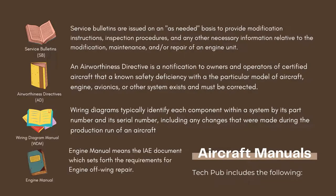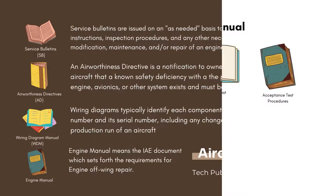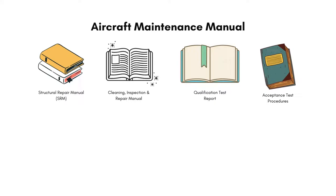The Engine Manual means the IAE document which sets forth the requirement for engine off-wing repair. There are various other manuals such as cleaning, inspection and repair manual, qualification test report, acceptance test procedures, and many more. These are all under the category of maintenance manual.